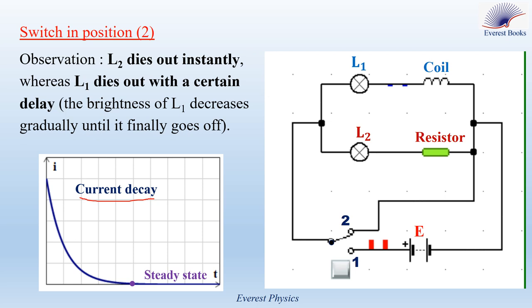Now in this study, the steady state is obtained when the current becomes constant. In our case, the current becomes constant when its value becomes zero. So this is the steady state in case of current decay.